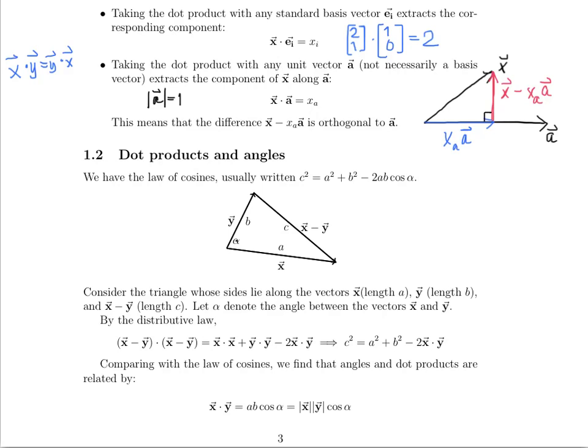By taking advantage of already knowing the law of cosines, we can find another way to define the dot product. Let's name these sides as vectors. Here, side a will be vector x. Side b will be vector y. And as a result, side c becomes the vector x minus y.